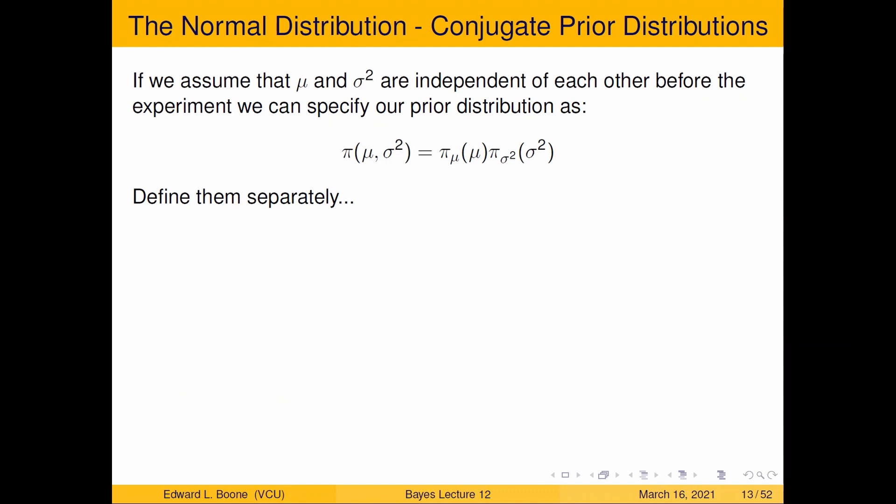So one way to make it work is if we assume that mu and sigma squared are independent of each other before the experiment. Like a priori, we have no idea how they related to each other. Then we can specify a prior distribution where we just break it apart. We're going to set a prior distribution for mu and we'll set a prior distribution for sigma squared. So we're going to define this one separately from this one instead of trying to do it jointly.